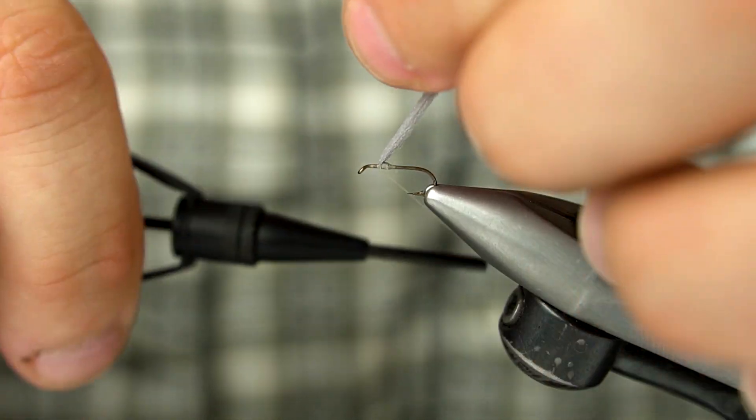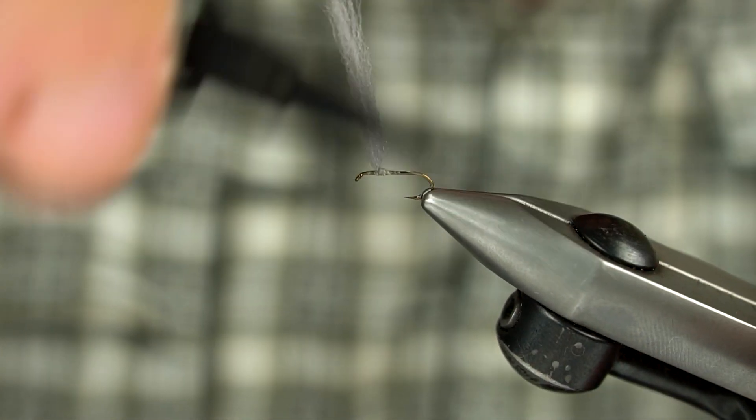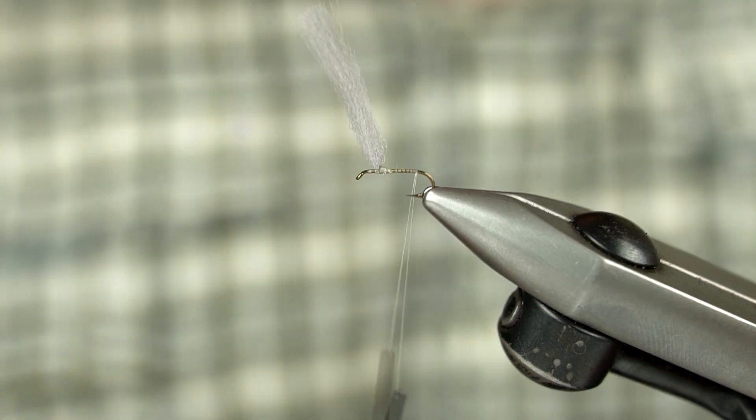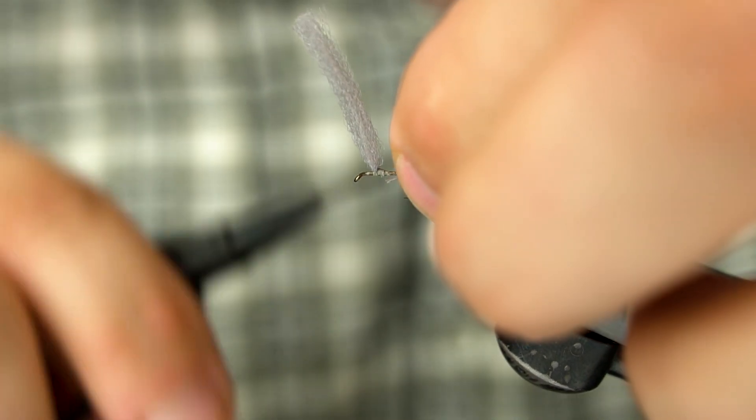Bring your thread to the back of the hook and we are going to secure a small clump of hackle fibers on top of the hook, trimming the butts so they end just before the wing.